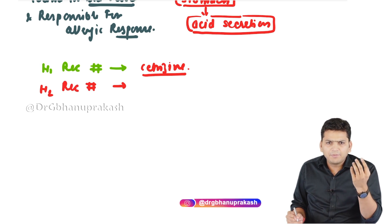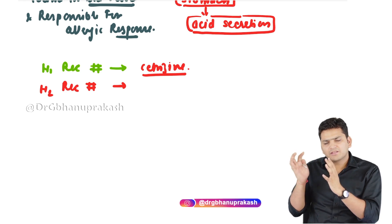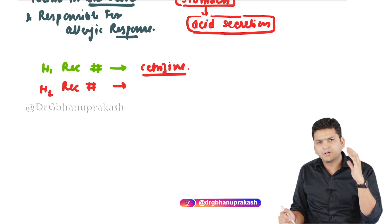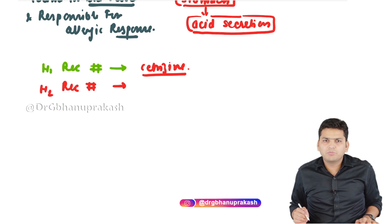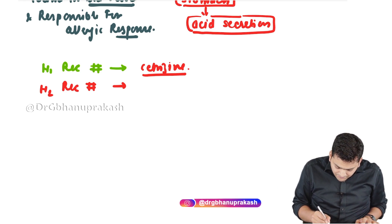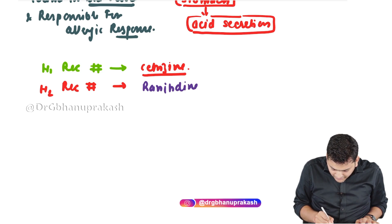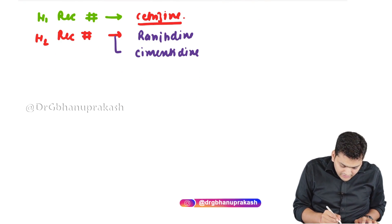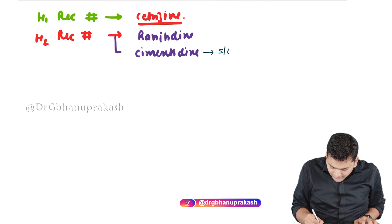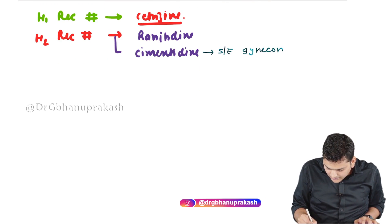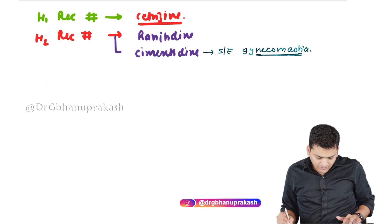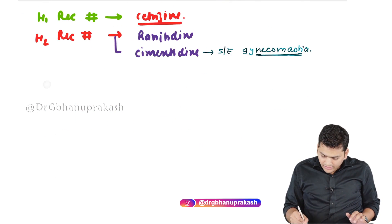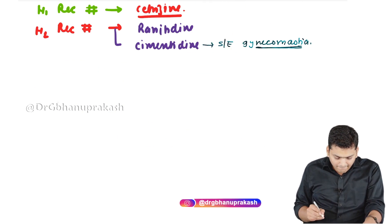For H2 receptors: if a patient has acute gastritis or acid peptic disease with epigastric pain, retrosternal burning, or bitter taste in the mouth, you can use H2 receptor blockers. Examples of H2 receptor blockers are ranitidine and cimetidine. Cimetidine is particularly avoided in males because it has a peculiar side effect — it leads to gynecomastia.